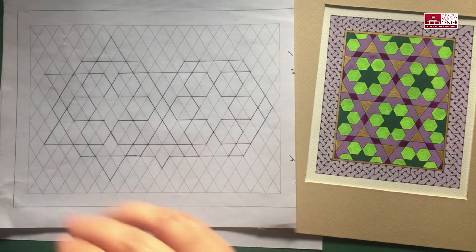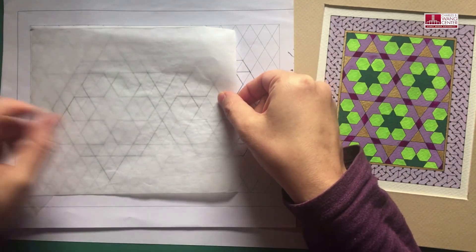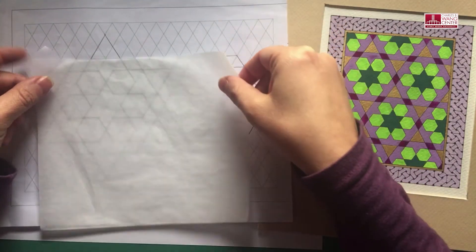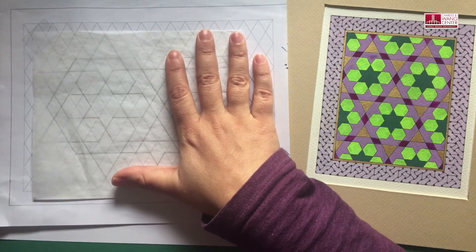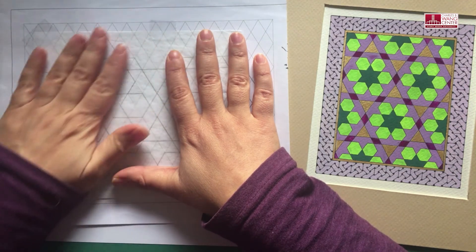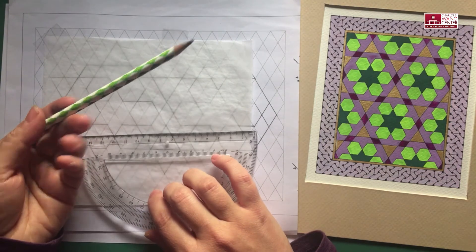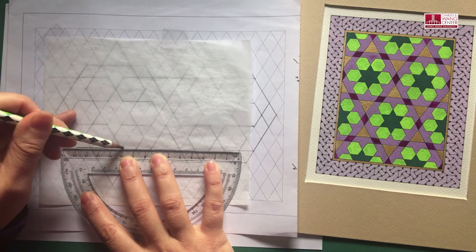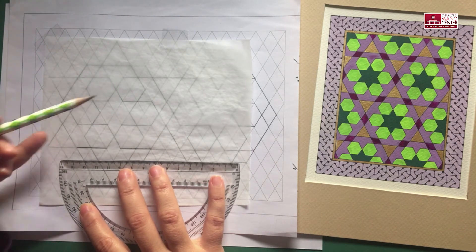Once you are done, in order to do the transfer, you put a tracing paper over your pattern and then you tape it down. So you make sure that it doesn't move. I'm just putting a tape here. And then with the help of your ruler and your pencil, you're tracing over all of your construction lines, the pattern lines basically. You're just doing it all at once.